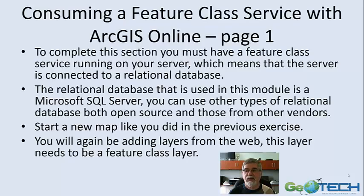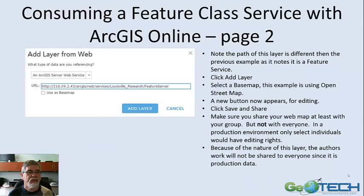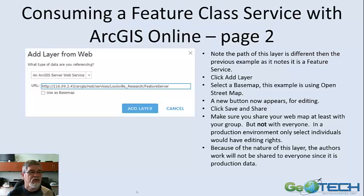You're going to start a new map like you did previously, creating this as a feature class map. You'll be adding layers from the web to see how this all transfers. On ArcGIS Online, we select a new map, and we see a window that is very similar to what we saw before.